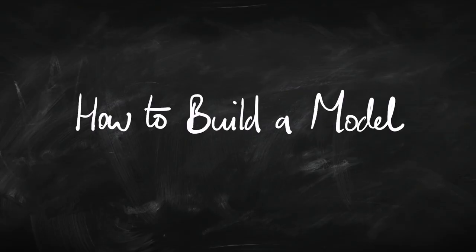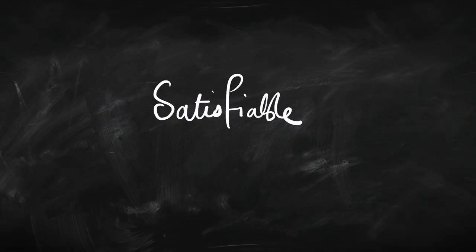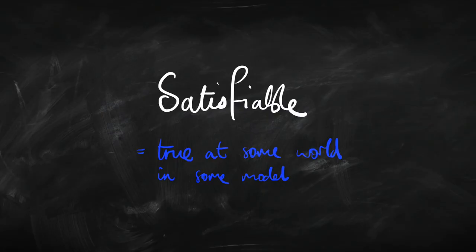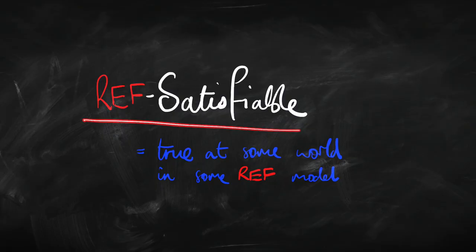We're going to need some basic concepts first. We need to understand what we mean by a sentence being satisfiable. Satisfiability just means that the sentence is true. In the context of modal logic, that means there is a state in a model that makes that sentence true. A sentence is satisfiable when some state in some model makes it true. We might be interested in whether a sentence is ref-satisfiable — satisfiable at some state in a reflexive model, a model where the accessibility relation is reflexive. Or we might be looking at whether a sentence is transitive-satisfiable — satisfiable in some transitive model.